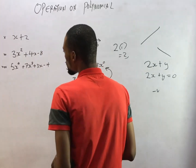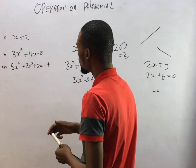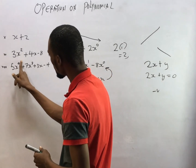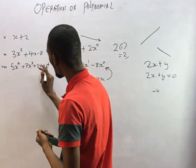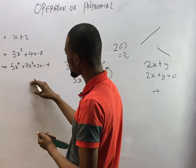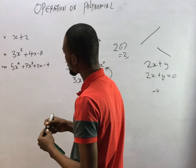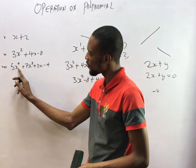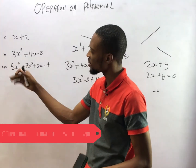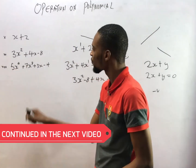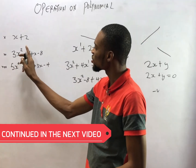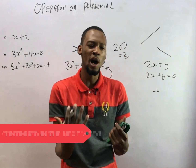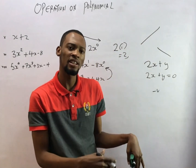Now look at the third example of a polynomial: 5s raised to the power of 4. The powers are 4, 3, then s raised to the power of 1 — so it's descending: 4, 3, 1. Those are polynomials. Polynomials have a degree. The highest power of the variable here is 4, so this is a fourth-degree polynomial. The highest power in the second example is 2, so that is a polynomial of second degree. The degree of a polynomial is determined by the highest power — not the other lower powers.